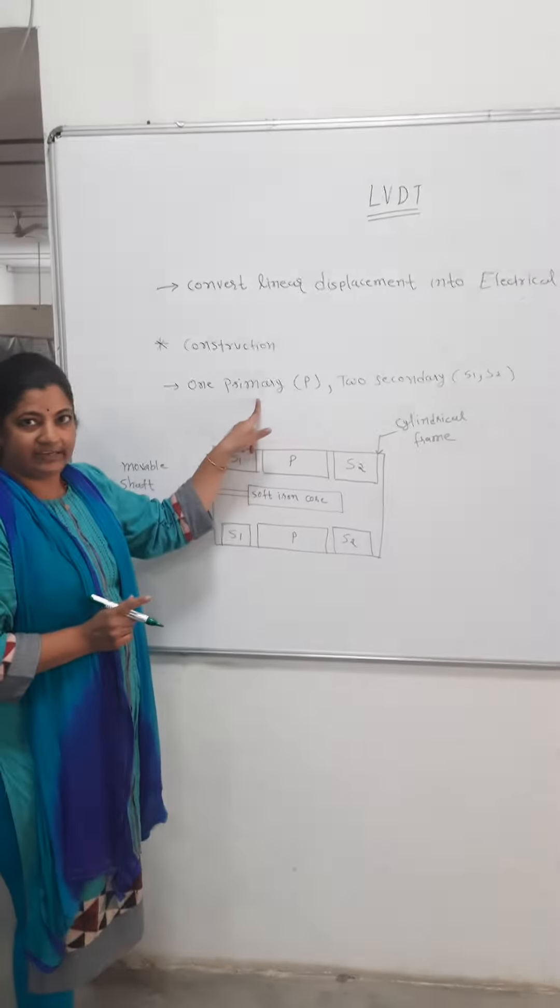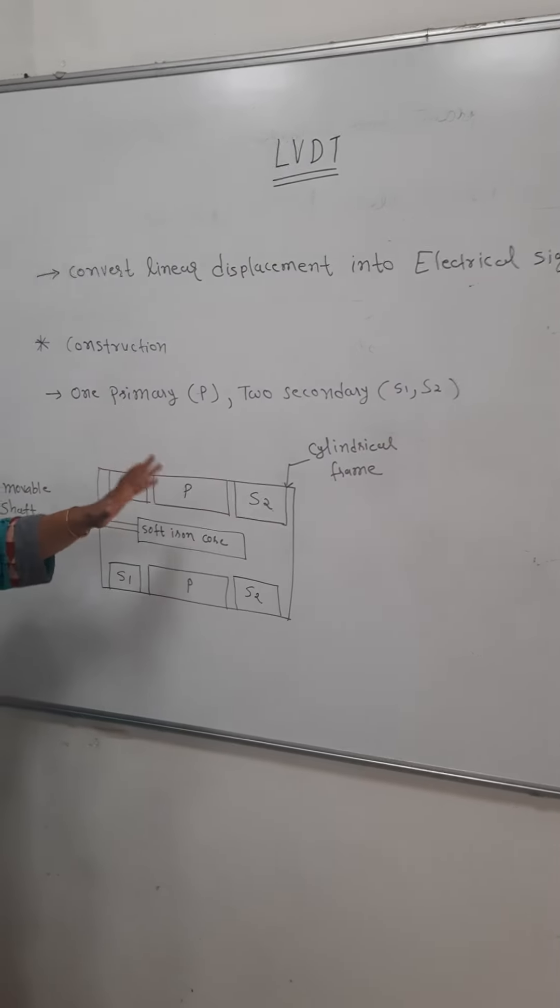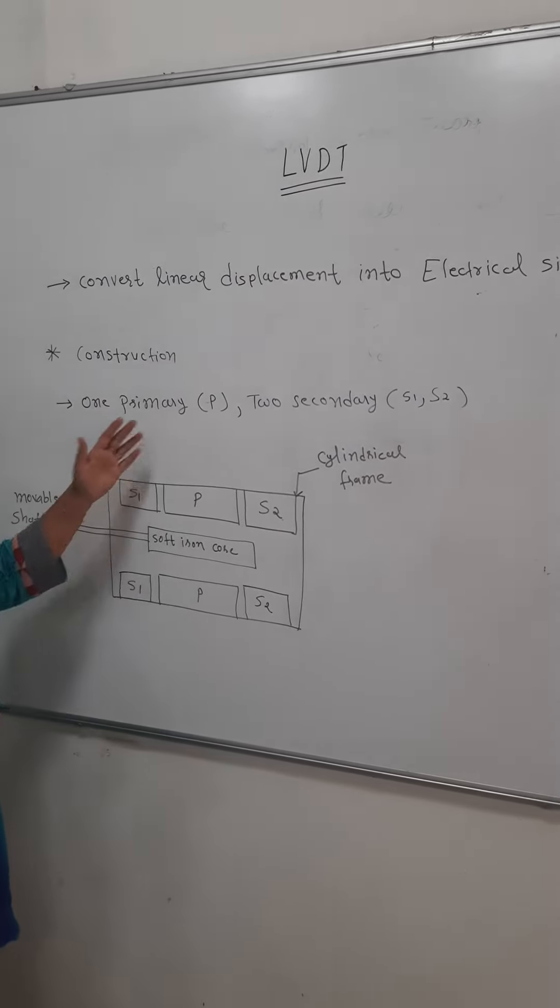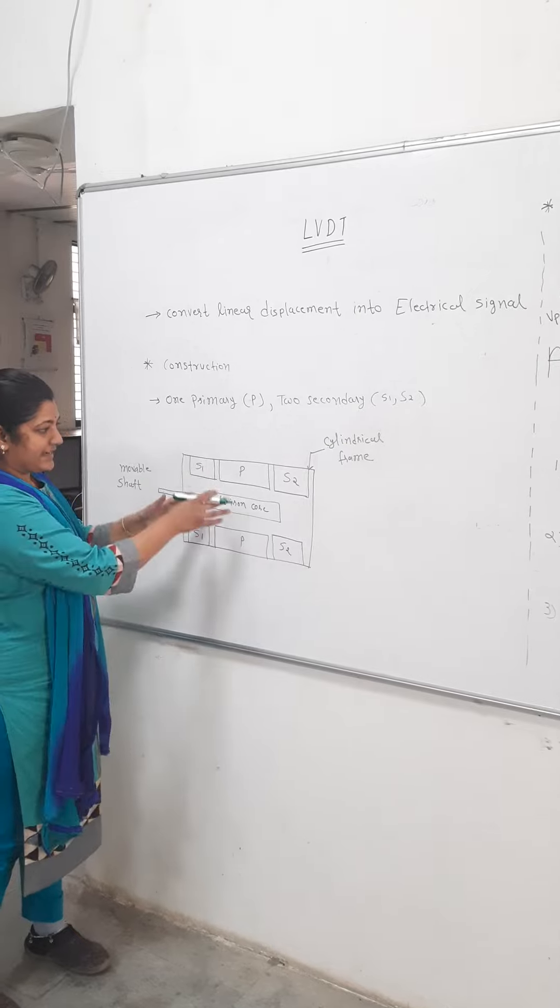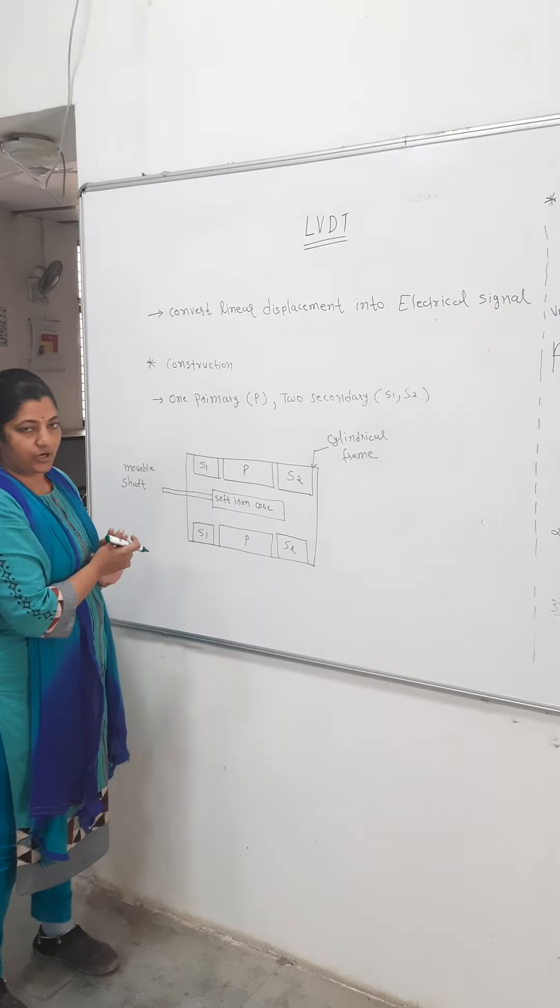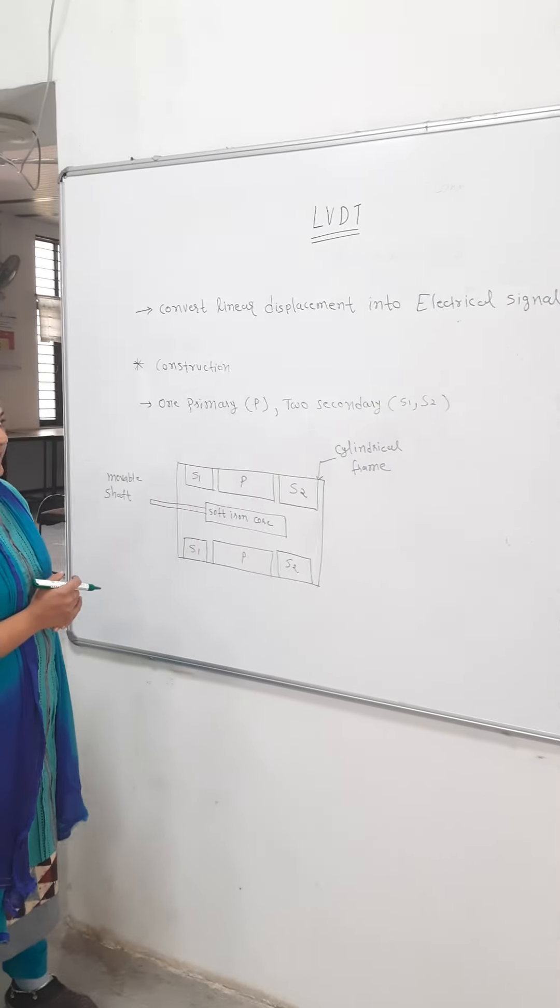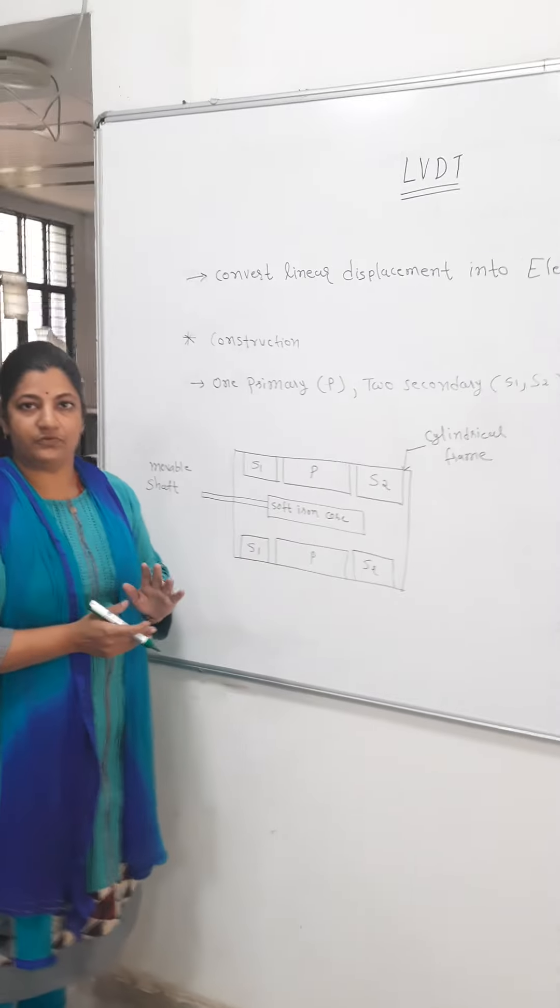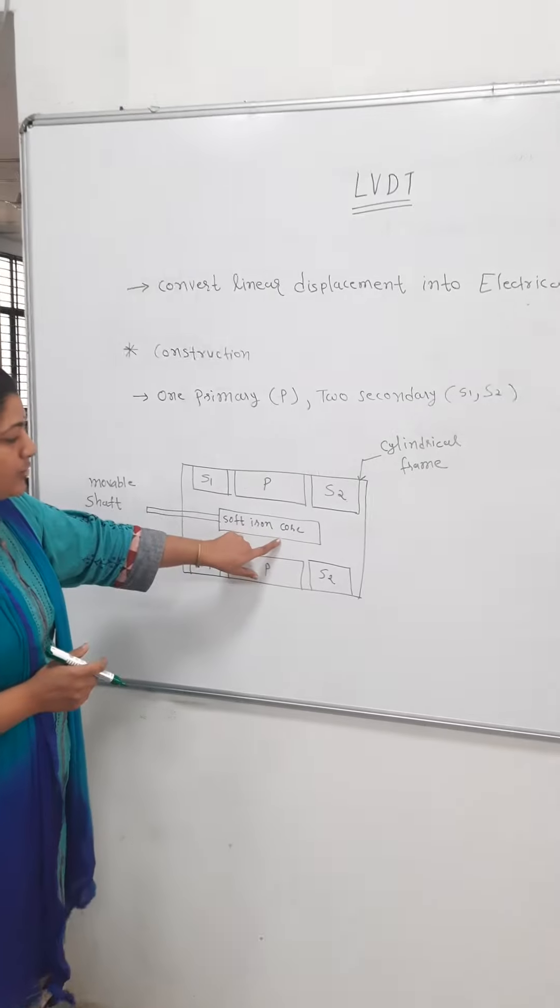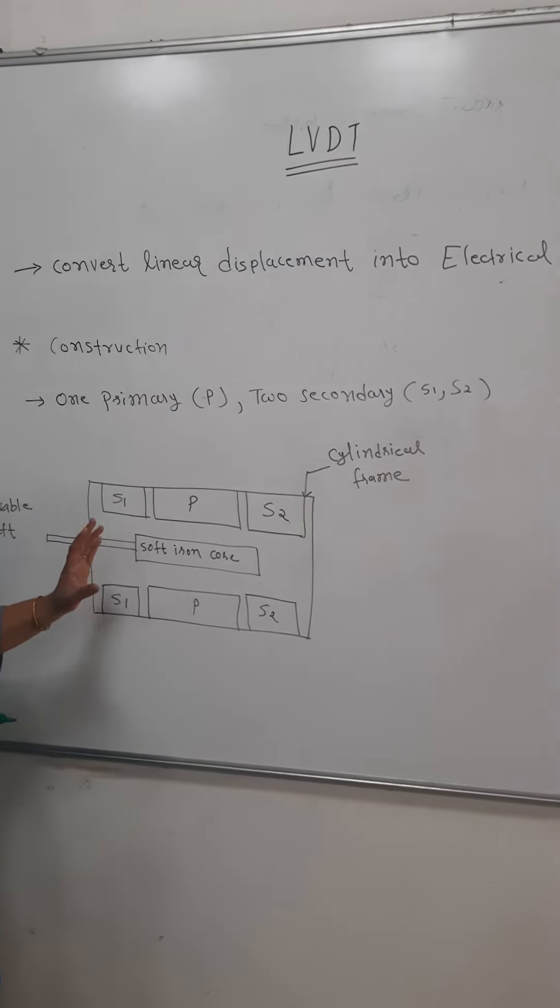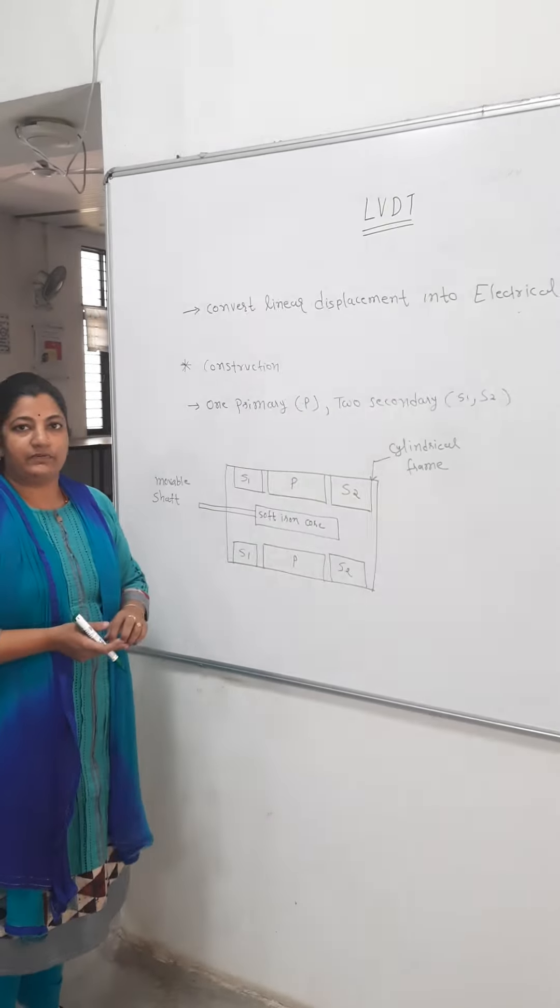First things, one primary it will have and two secondaries. So it is one kind of transformer but having one primary and two secondary. Same thing is given in the construction form also. You can see this is the cylindrical frame where inside we have to put all the components, primary and on both sides we have to place S1 and S2 in such a way that both have the same number of turns. Now, another side in between this we have the soft iron core which is movable in nature. So this motion we are trying to convert in the form of electrical signal that is the concept of LVDT.